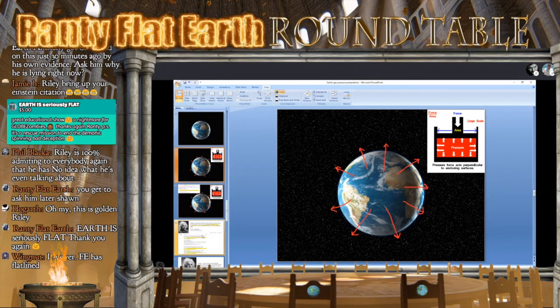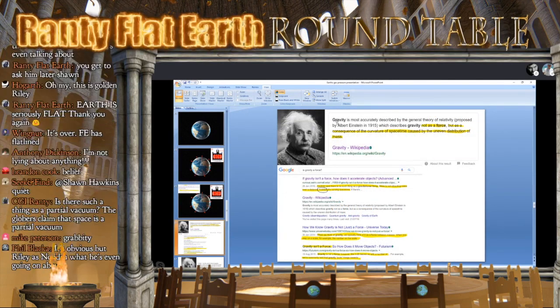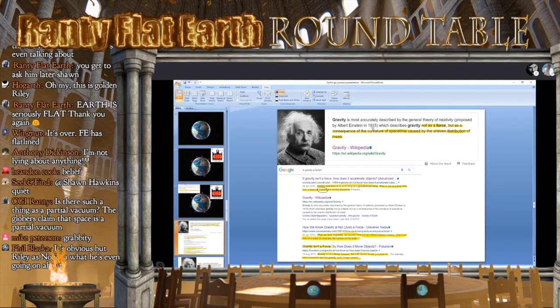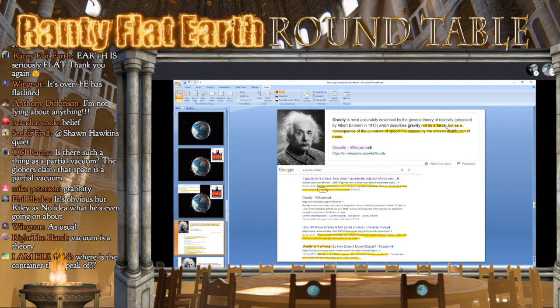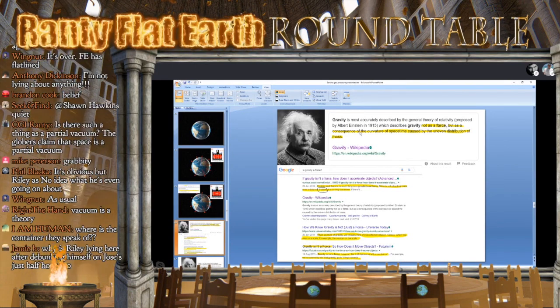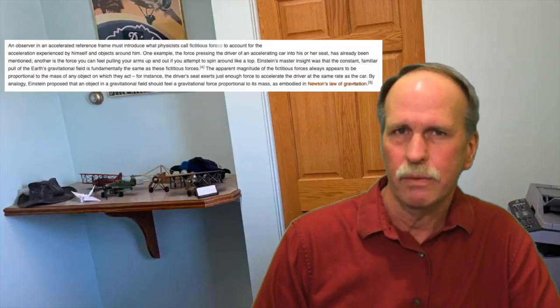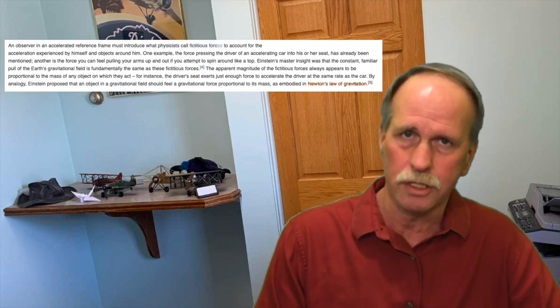If Newton's laws are true, an object in motion will remain in motion unless acted upon by a force. That's one of his laws. They do need a force. Albert Einstein, according to Wikipedia, gravity is most accurately described by the general theory of relativity proposed by Albert Einstein in 1915, which describes gravity not as a force, which is a problem because they need something to stop the atmosphere bursting into space instantaneously, but as a consequence of the curvature of space-time caused by the uneven distribution of mass. Now here's the problem that you run into when you try and cite scientific references.